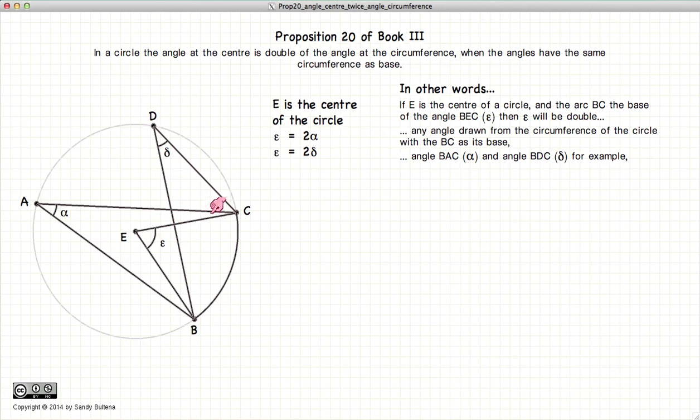So BDC, or delta, will be half of epsilon. Or BAC, alpha, will be half of epsilon.